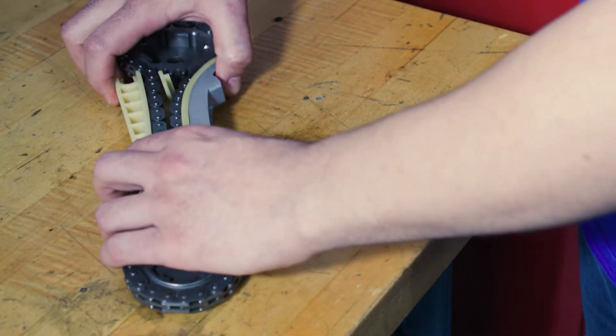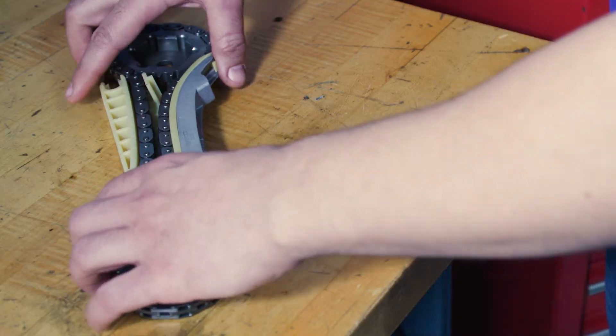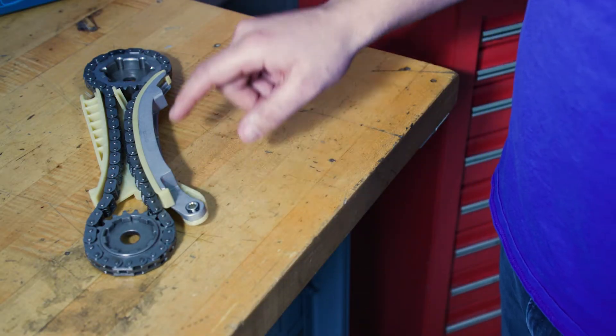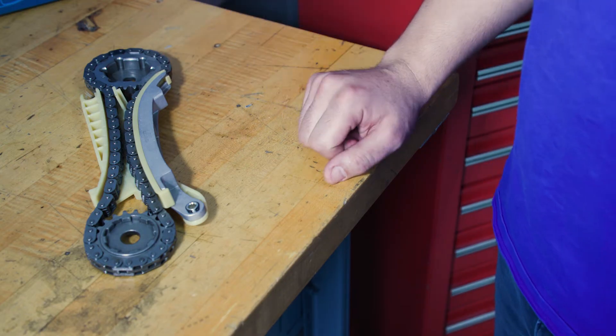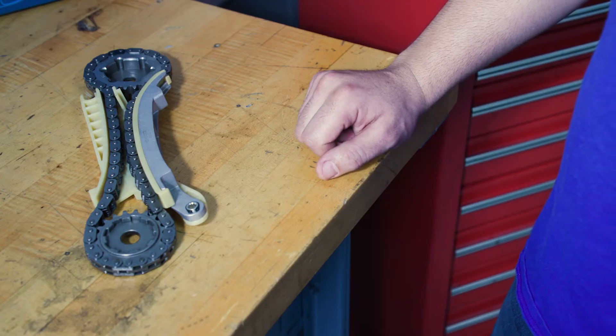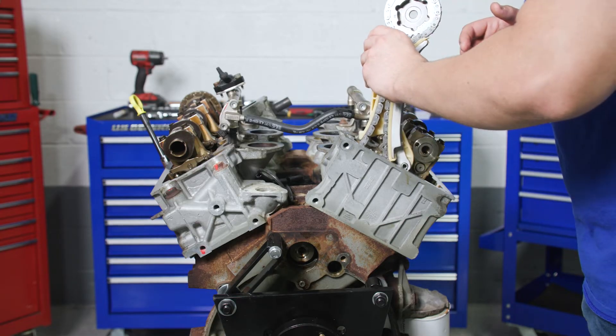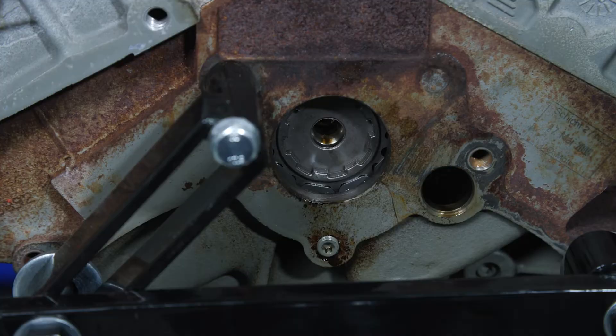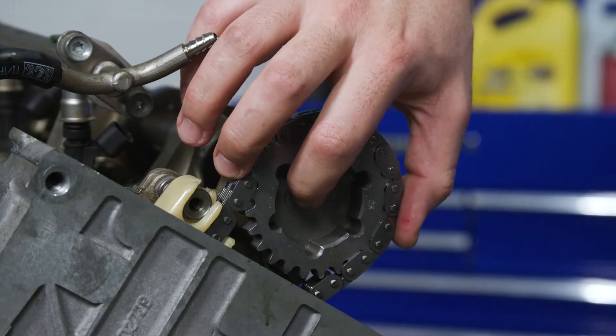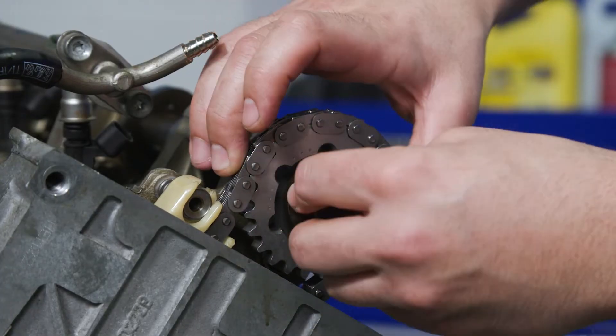Assemble the new cassette, placing the correct counterbore side of the sprockets towards the engine. There are no timing marks to align on these sprockets and chain. Insert the assembly into the engine. Loosely install the lower and upper bolts so the sprockets can spin.